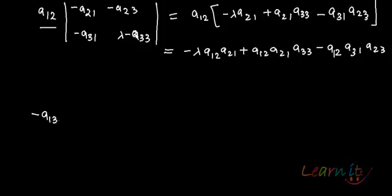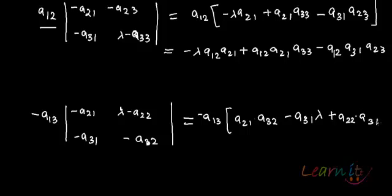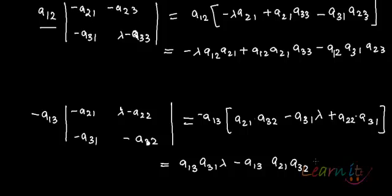Similarly, for the third expanding term: minus A13 times the determinant of [minus A21, λ minus A22; minus A31, minus A32]. This gives minus A13 times [A21·A32 minus A31·(λ minus A22)], which when completely multiplied out becomes: A13·A31·λ minus A13·A21·A32 minus A13·A22·A31.